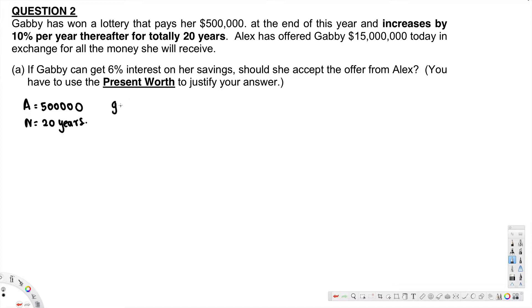And g is equivalent to 10% per year, and then i is equivalent to 6%.